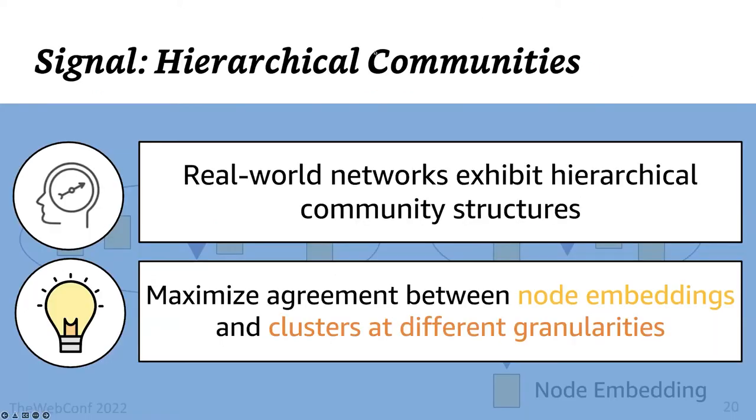The above loss terms, the previous two loss terms, contrast an entity with other individual entities and their input features, thereby learning communities at a relatively low level. Here we consider communities at a higher level than before. It's well known that real-world networks possess hierarchical community structures. So based on this observation, we model this phenomenon by contrasting entities with hierarchical communities at different granularities.